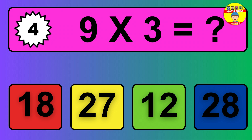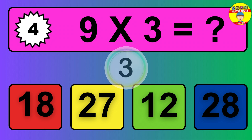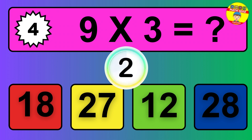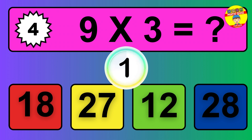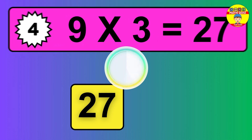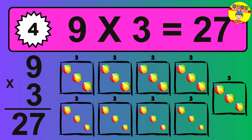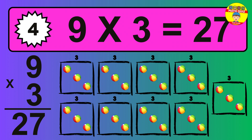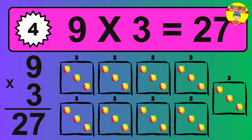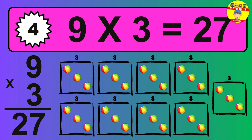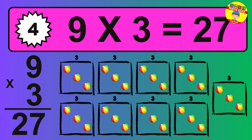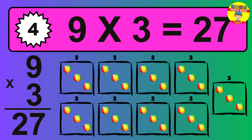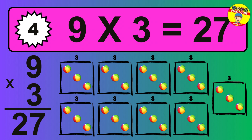Question 4. 9 times 3 equals what? To calculate, we have 9 groups with 3 balls each one. So how many balls do we have? 27 balls.